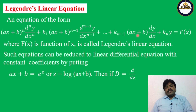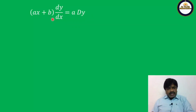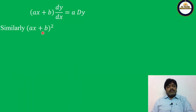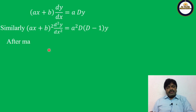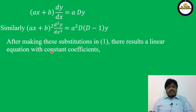We find (Ax+b) dy/dx and (Ax+b)² d²y/dx² values. We get: (Ax+b) dy/dx = A·Dy. Note that in the previous case (Cauchy's equation) we had only Dy, but here we get A·Dy, where A is the coefficient of x. Similarly, (Ax+b)² d²y/dx² = A²·D(D−1)y.